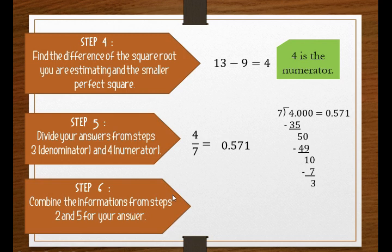Step six: combine the information from steps 2 and 5 for your answer. So 3 point something equals 3 and 4 over 7. This is the fraction we have from steps 3 and 4.